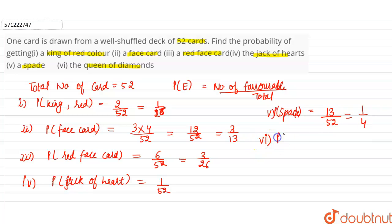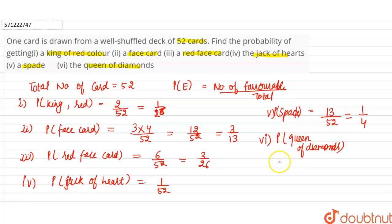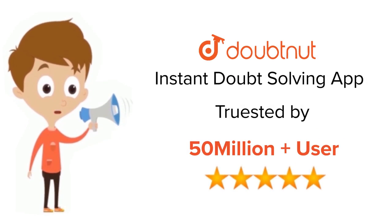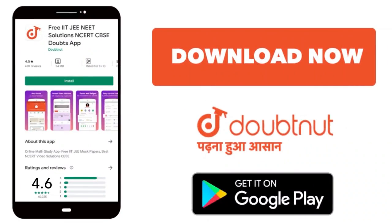The last part asks for the probability that the card drawn is the queen of diamonds. There are four queen cards, out of which one is of diamonds. So probability will be equal to 1 divided by 52. For class 6 to 12, IIT and NEET level — trusted by more than 5 crore students. Download Doubtnut app today.